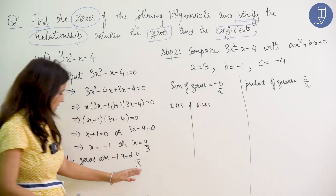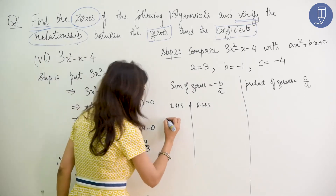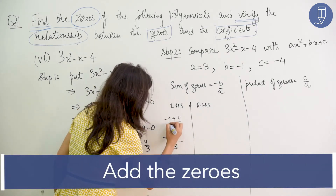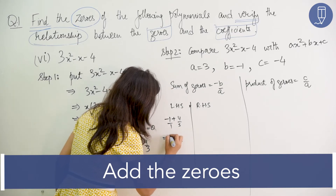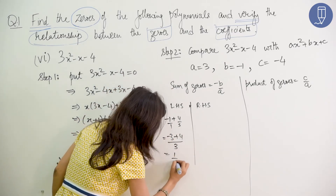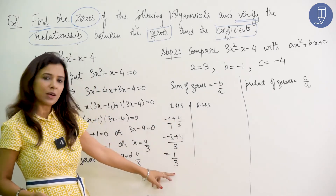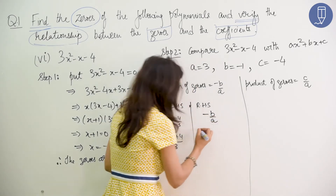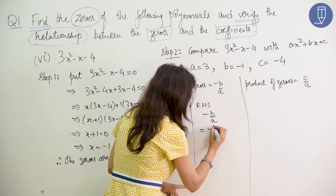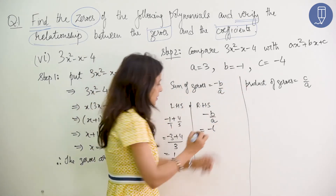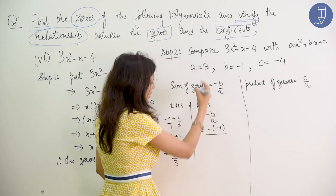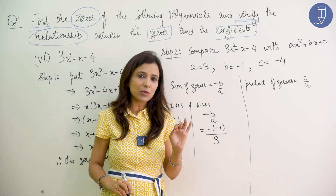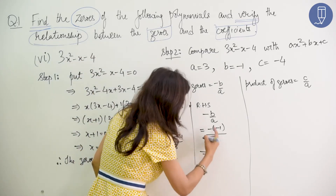Sum of zeros: minus 1 plus 4 by 3. Adding these gives minus 3 plus 4 over 3, which is 1 by 3. Now the right hand side: minus b by a. Put the minus sign first, then the bracket with b's value which is minus 1, divided by a's value which is 3. That gives 1 by 3. LHS equals RHS.